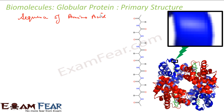The sequence plays a critical role. If you change the sequence, the property will change. So in order to function properly, the protein must have the correct sequence. If you change the primary structure or sequence of the protein, it will be a different protein altogether with a different function. So sequence matters — primary structure talks only about the sequence.